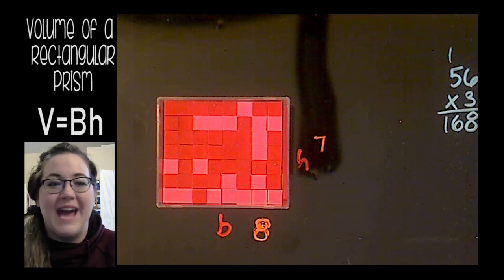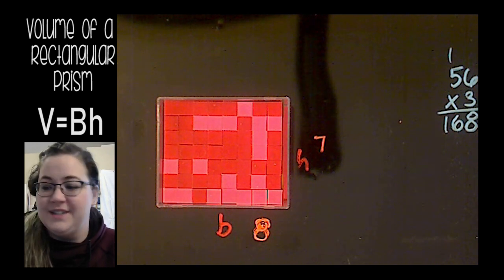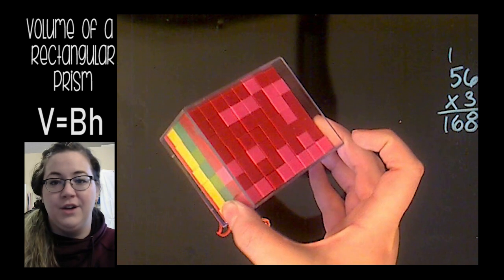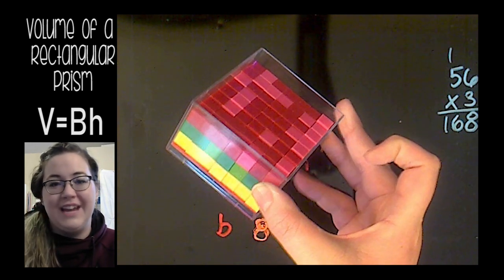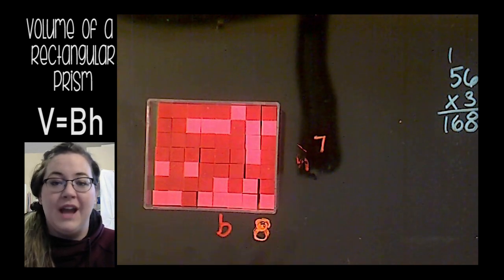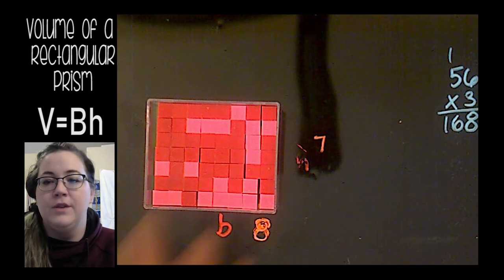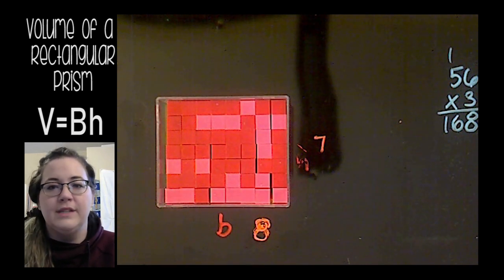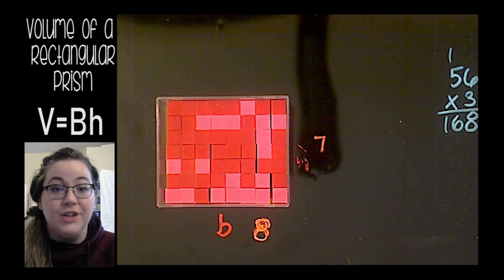Okay, so I was able to add another layer of 56, so now I have a layer of yellow, a layer of green, and a layer of red. Each layer has 56 cubes. So 56 times all three colors is 168.